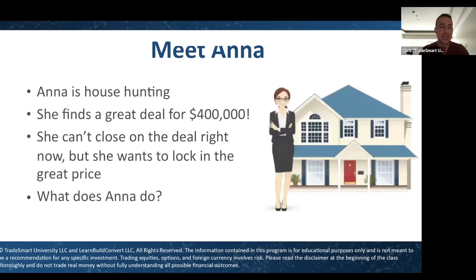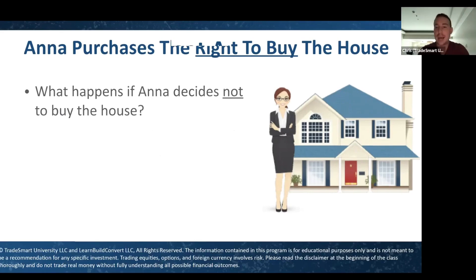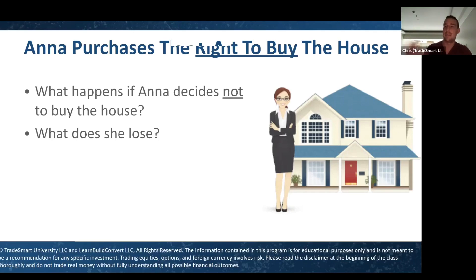Diving right in — buying options. We're going to use an analogy. Meet Anna. Anna is house hunting. She finds a great deal: a house for $400,000. She can't close on the deal right now, but she wants to lock in the price. So Anna purchases the right to buy the house. She gives the seller $2,000 now, and in exchange the seller agrees to sell her the house for $400,000 anytime in the next three months.